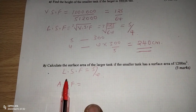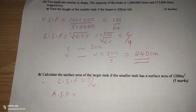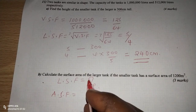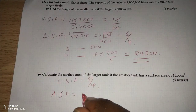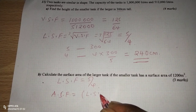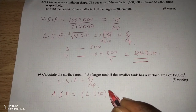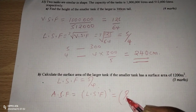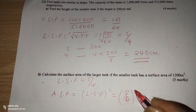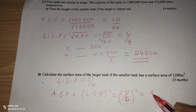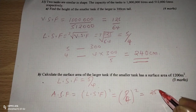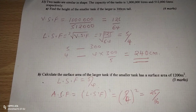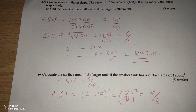Using the area scale factor, we square the linear scale factor: squaring 5 over 4 gives us 25 over 16. So the area scale factor is 25 over 16.